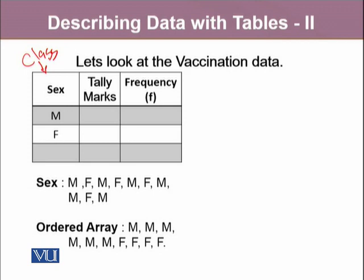We also want to make sure that these categories are mutually exclusive and contain all the possible values of the variable. In this case, the sex variable has two possibilities: either male or female. Once we're done with this, we start constructing the tally marks. Tally marks are bars which identify each single individual. The first response is male, so the first tally will be placed there. When it comes to the fifth tally, it goes across. Then there is a sixth male.